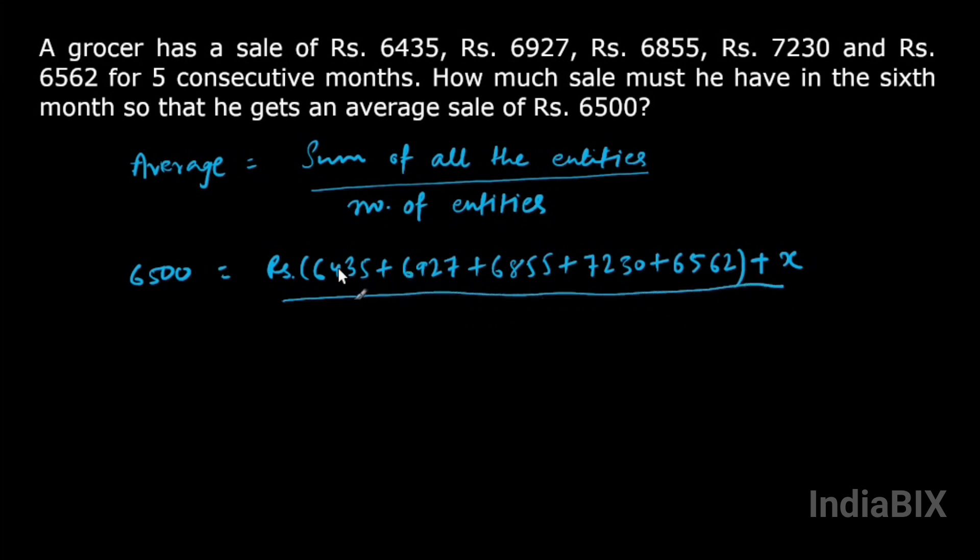This is sum of all the sales for six consecutive months. We know the value of first five months but we don't know the value of sale of the sixth month, so we have assumed it to be x and total number of entities will be six.